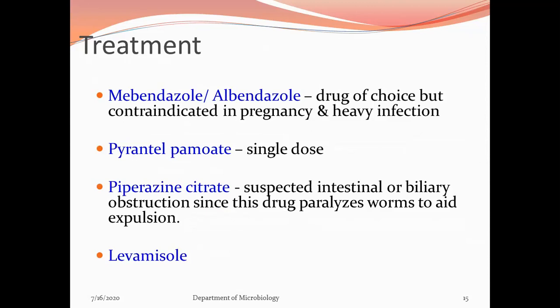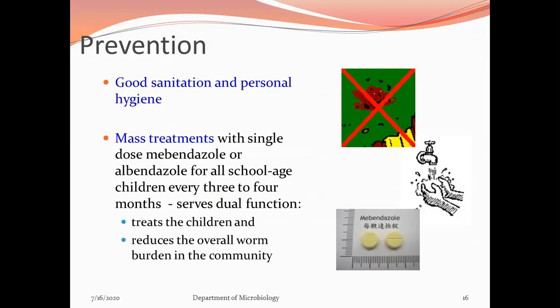Treatment: Albendazole is the drug of choice but is contraindicated in pregnancy and heavy infection. Pyrantel pamoate as a single dose is also used. Piperazine citrate is used in suspected intestinal or biliary obstruction as it paralyzes the worm to aid expulsion. Prevention: good sanitation and personal hygiene. Mass treatment with a single dose of mebendazole or albendazole for school-age children every 3–4 months reduces overall worm burden in the community.